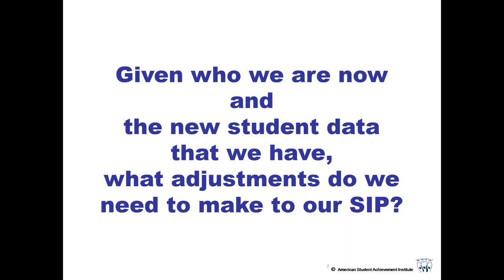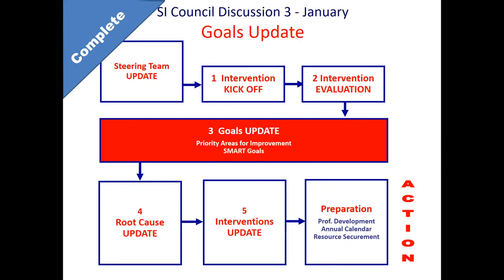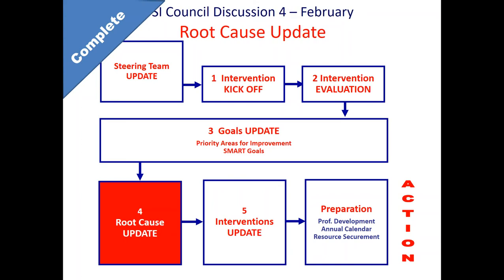The question is: given who we are now and the new student data that we have, what adjustments do we need to make in our School Improvement Plan? In January, we looked at making adjustments to your goals, and we set and reestablished your achievement goals for next school year. Your last discussion was on updating your root causes — you looked at all of your goals and asked, what's getting in the way? Why aren't we achieving those goals? What's blocking this achievement? You came up with root causes — those areas that are impacting achievement in your targeted achievement goals.